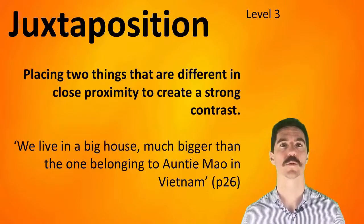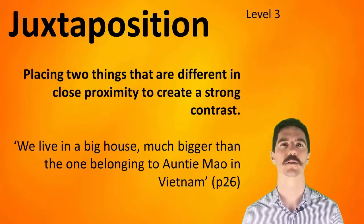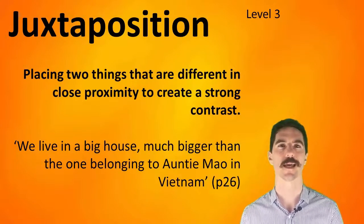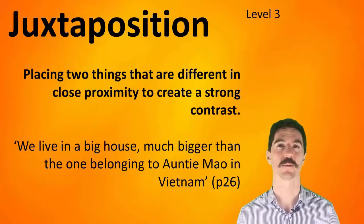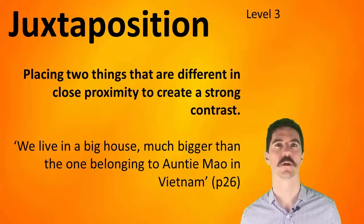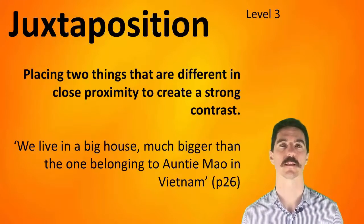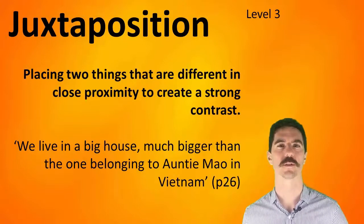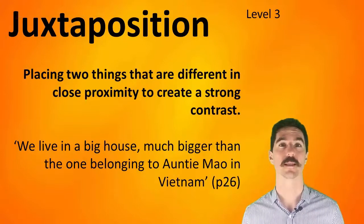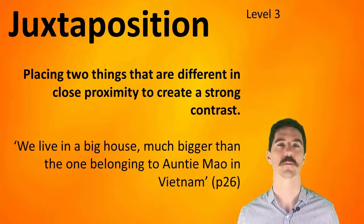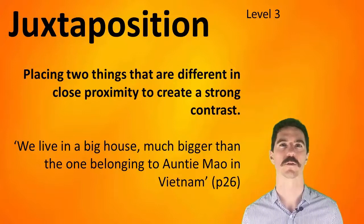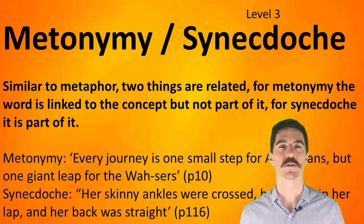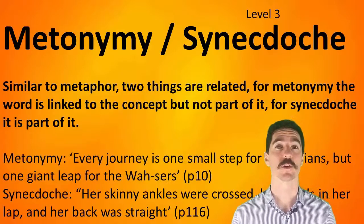Juxtaposition is when you put two things that are starkly different side by side to show the contrast. You mostly want to be looking for juxtapositions towards the end of the novel and towards the beginning — when discussing her fitting in with her boyfriend towards the end, and also at the start when the family is fitting into the new culture of Australia.